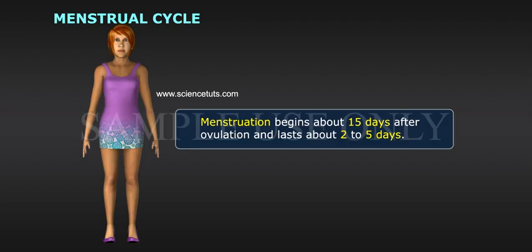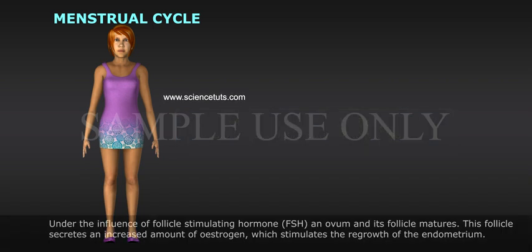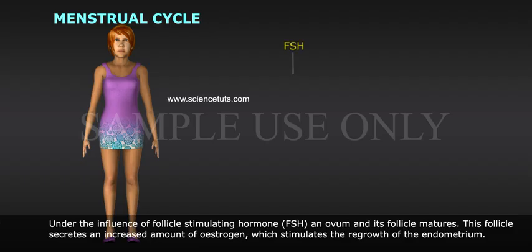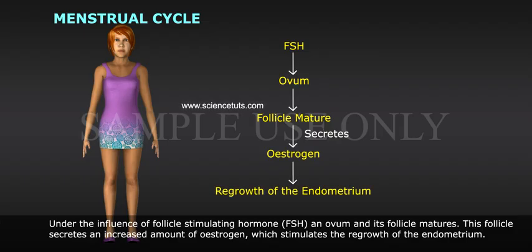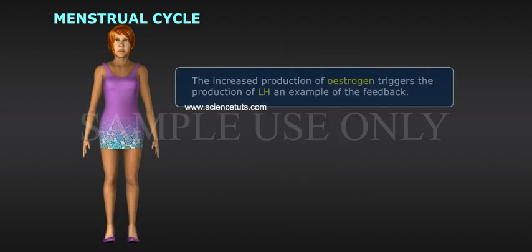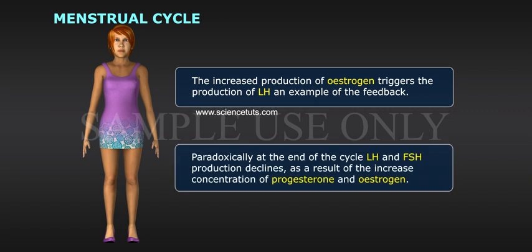Menstruation begins about 15 days after ovulation and lasts about 2 to 5 days. Under the influence of follicle-stimulating hormone (FSH), the ovum and its follicle mature. This follicle secretes an increased amount of estrogen, which stimulates the regrowth of the endometrium. The increased production of estrogen triggers the production of LH — an example of feedback. Paradoxically, at the end of the cycle, LH and FSH production declines as a result of the increased concentration of progesterone and estrogen.